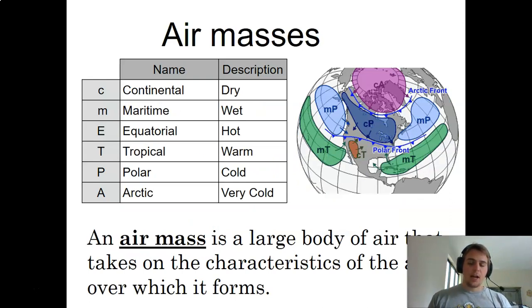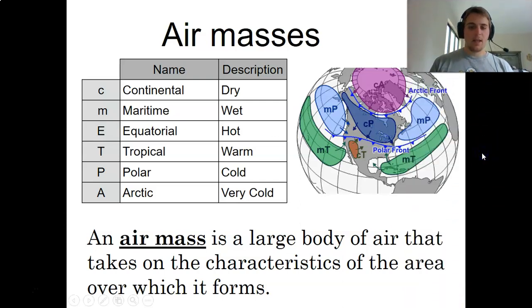Weather and meteorology, a lot of it has to do with air masses, how the air on Earth and on Earth's atmosphere moves around and how these masses interact with one another. An air mass is a large body of air that takes on the characteristics of the area over which it forms. Some descriptions and things you're going to want to be aware of, as well as their abbreviations. C means continental, an air mass forming over a continent, over land.